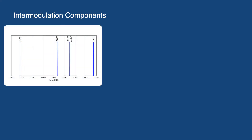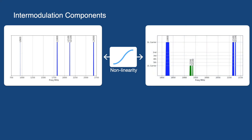It is necessary to understand the creation of intermodulation components to understand PIM interference. In this diagram on the left, we are showing an example of downlink frequencies for a mobile operator. When multiple downlink transmissions encounter a nonlinearity in the transmit path, such as with a degraded connector or corroded cable, the result is the creation of intermodulation frequencies. When two or more signals with different frequencies are present in a nonlinear system, signals with other frequencies are created — this process is called intermodulation. When the frequencies of an intermodulation signal overlap with the uplink frequencies at a cell site, they can cause PIM interference.